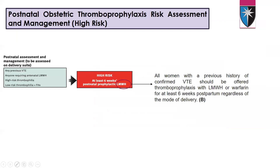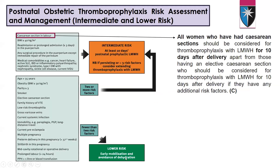For postnatal assessment and management: any previous VTE, anyone who required antenatal low molecular weight heparin, high-risk thrombophilia, or low-risk thrombophilia with family history — these are high risk and require at least six weeks of postnatal thromboprophylaxis. All women who have had caesarean section should be considered for thromboprophylaxis with low molecular weight heparin for 10 days after delivery, except those having elective caesarean section with no additional risk factor.